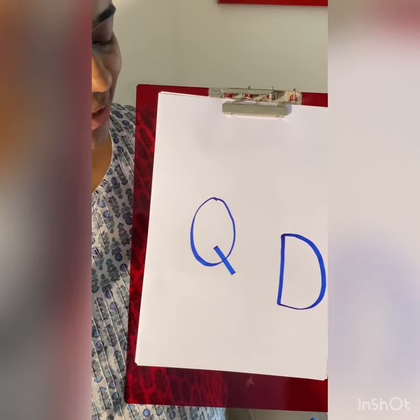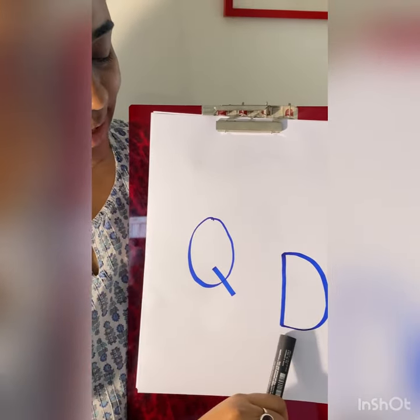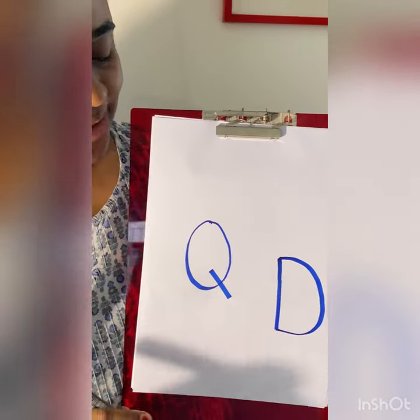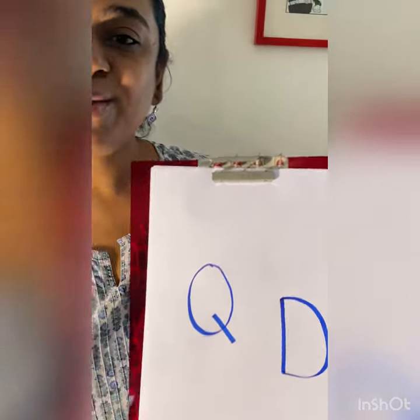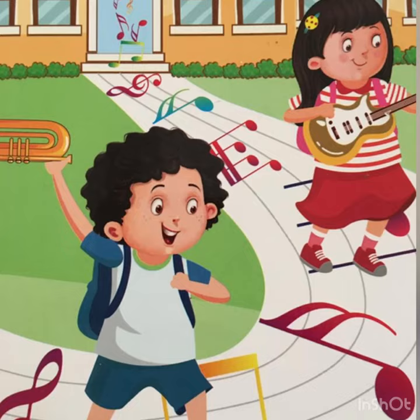For writing letter D, we make a standing line and then a curve — that makes letter D. So you can practice writing your letter Q and letter D in the notebook. Keep practicing and learning. I will see you all very soon — take care and bye!